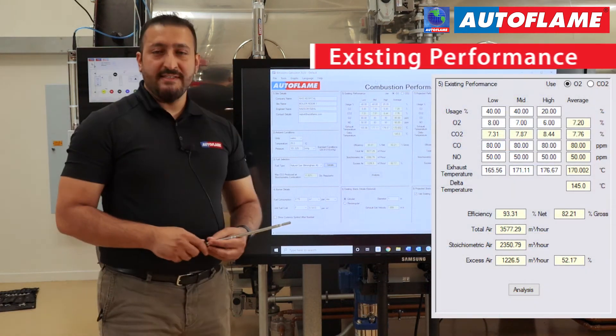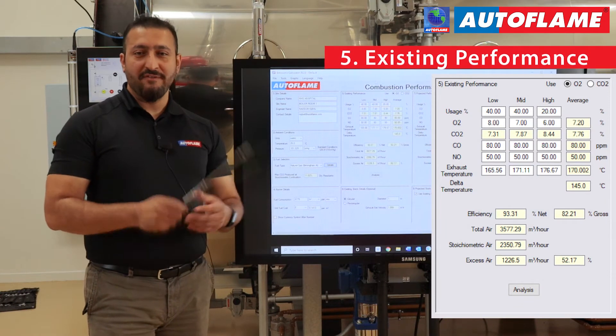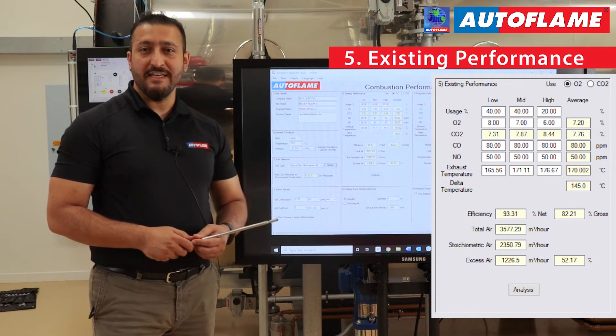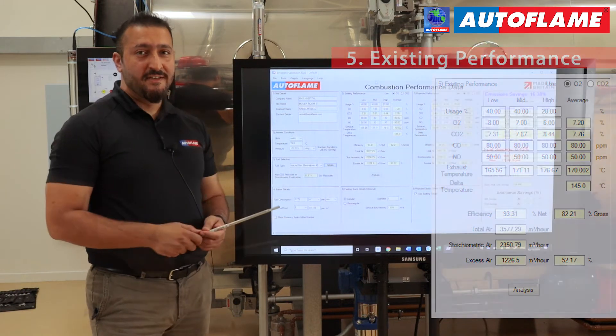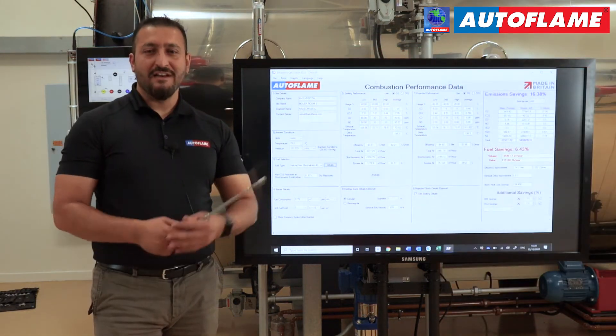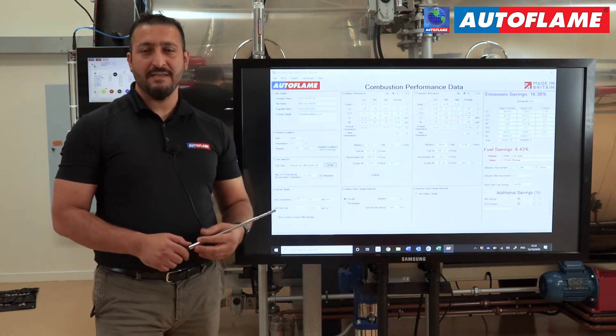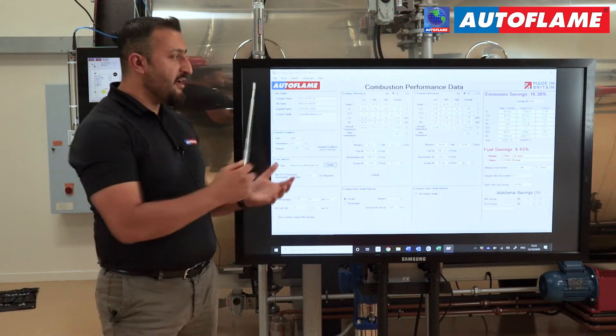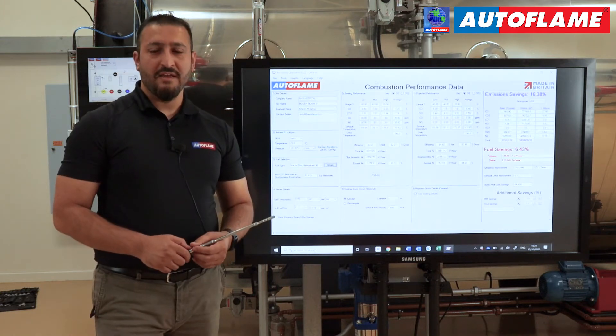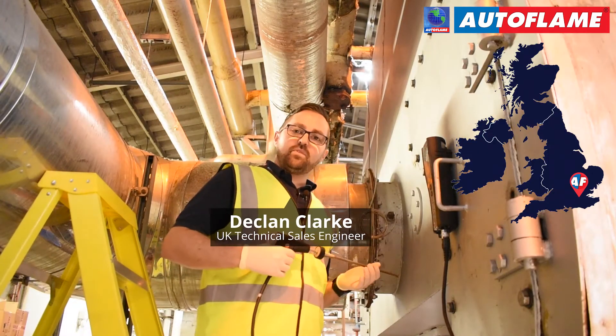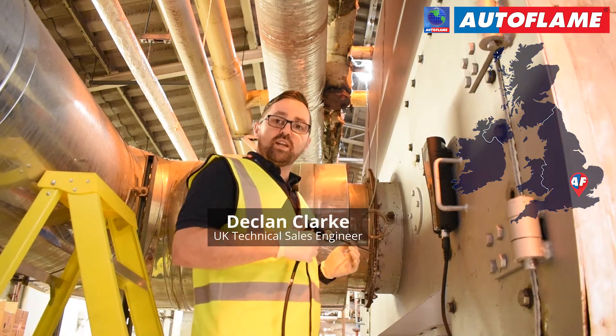Section five is your existing performance. This is where I will ask my friend Declan to pass on the information for a combustion audit he's just carried out at the NHS site. Declan, if you can kindly send me the information on CO, O2, stack temperatures for the NHS site, then I can proceed further with the emissions calculator. The boiler runs off natural gas. I'm going to take some readings now from the test point in the rear stack.